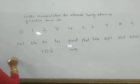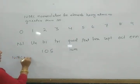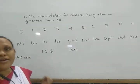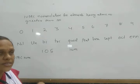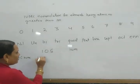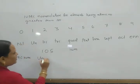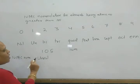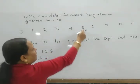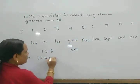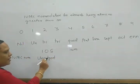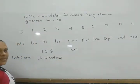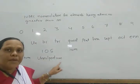The first letter of the IUPAC name is always a capital letter, and all others are small letters. For atomic number 105: digit 1 gives 'un', digit 0 gives 'nil', digit 5 gives 'pent'. So the name is Unnilpentium. The suffix '-ium' is added at the end.